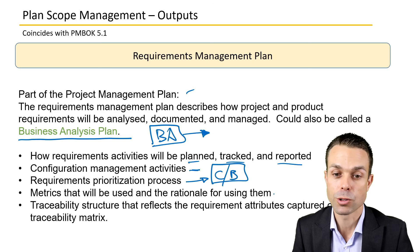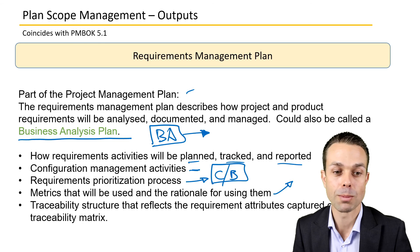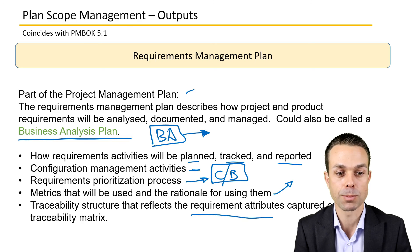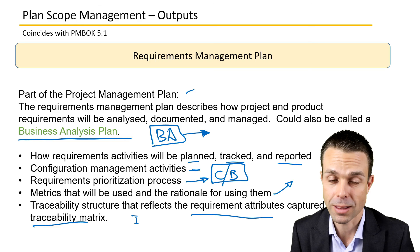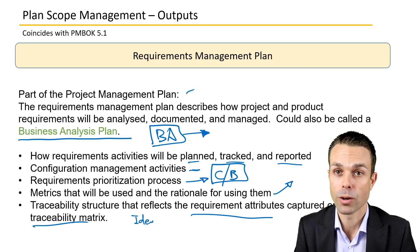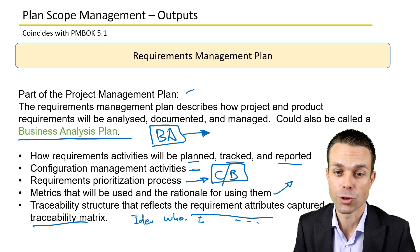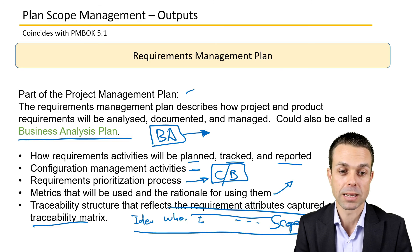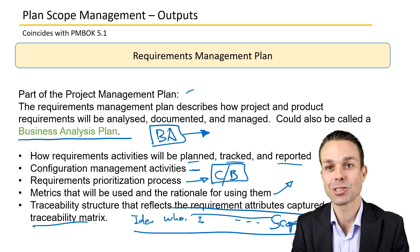Prioritization might be based on cost, benefit, or other factors, and that can be documented here so everyone is clear. The plan also includes metrics and the rationale for using them — typically around benefits or sequencing — and the requirements traceability matrix structure, capturing attributes like an identifier, who raised the requirement, what the requirement is, any risks or costs involved, and the scope item that meets that requirement. This ensures we understand that we are delivering what the customer wants. And that is Planning Scope Management.